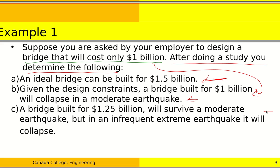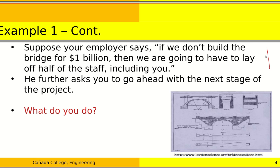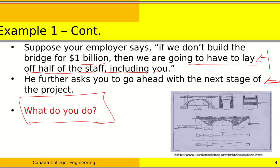On the other hand, if you increase the cost to 1.25 billion dollars, the bridge can survive a moderate earthquake, but an extreme earthquake will cause it to collapse. You and your team present these options to your employer, who says you have to build the bridge for a billion dollars or many people — including you — will be laid off. The question is: as an engineer, what do you do?